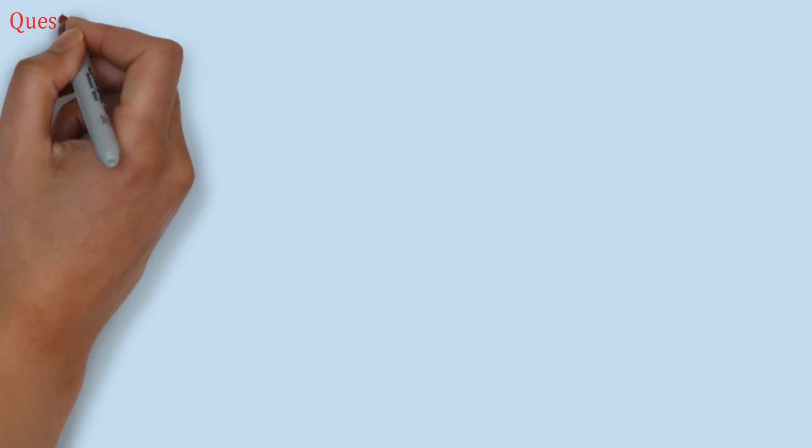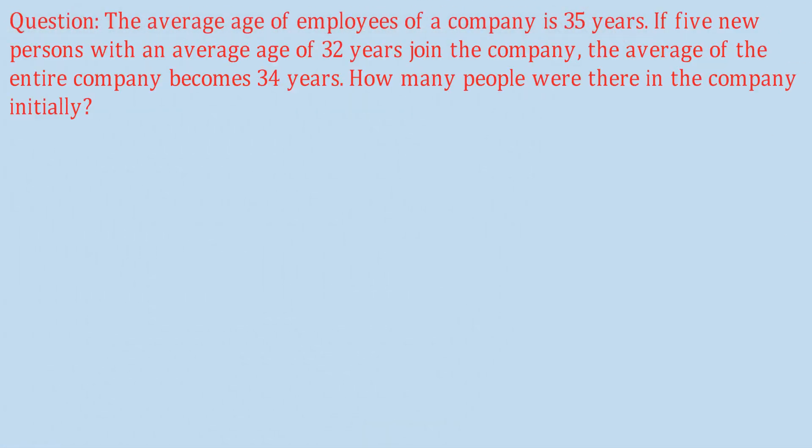Next question: the average age of employees of a company is 35 years. If five new persons with an average age of 32 years join the company, the average of the entire company becomes 34 years. How many people were there in the company initially? The average age is 35, and if five new persons with an average of 32 join, the new average becomes 34.